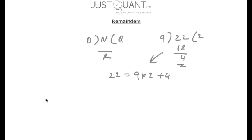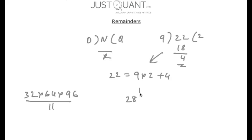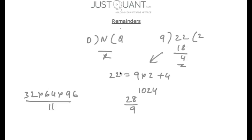But if I were to ask you to calculate the remainder of 32 times 64 times 96 divided by 11, how do we do this? Or what is the remainder of 28 to the power of 1024 when divided by 9? In this video we'll have a look at a few cases of remainders that may help us in solving problems like this.